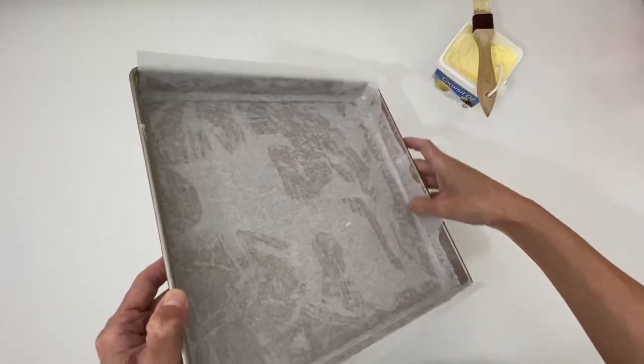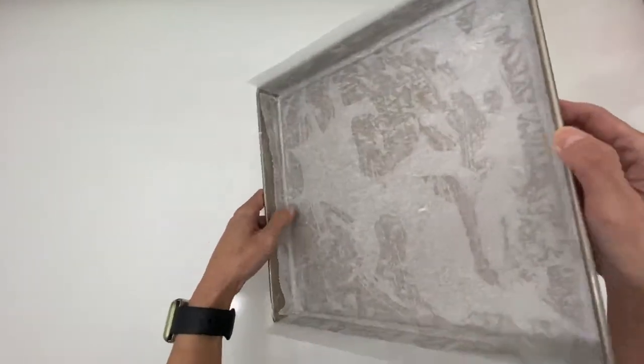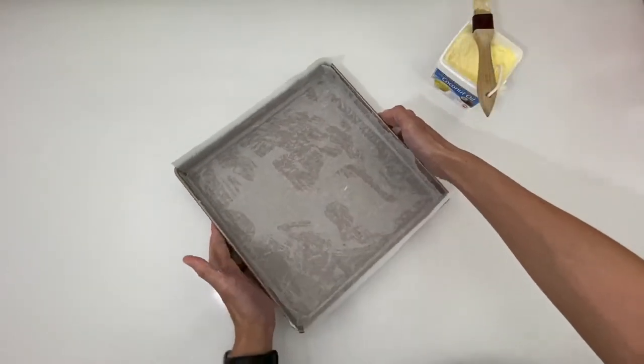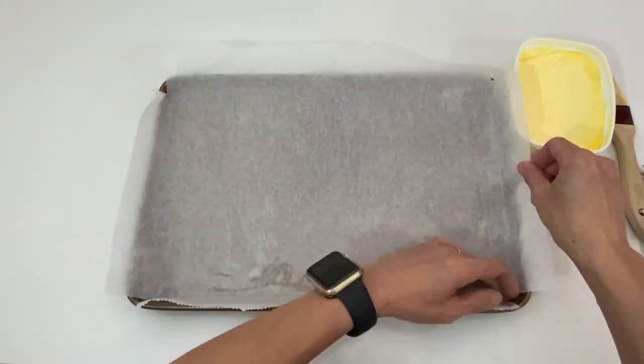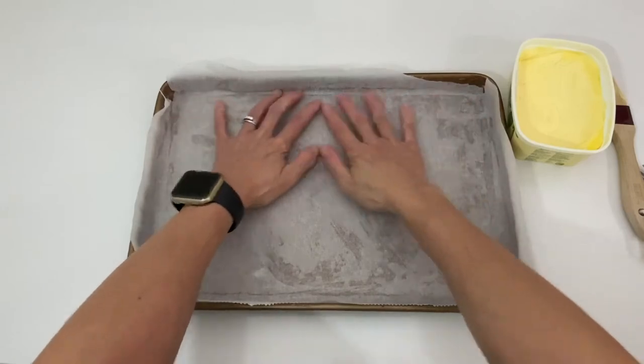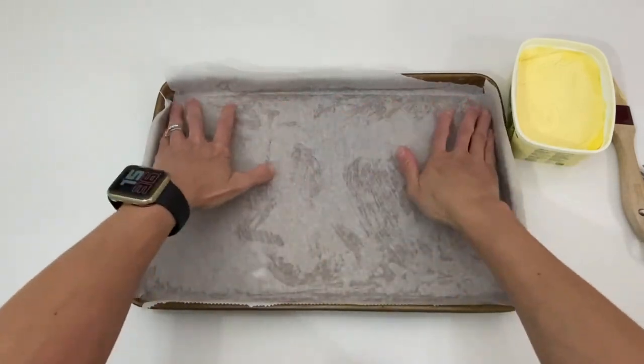There you have a shallow baking tin lined with parchment paper perfectly. This is how I use the exact same way to line my shallow rectangle baking tin. It is so simple, easy and quick, isn't it?